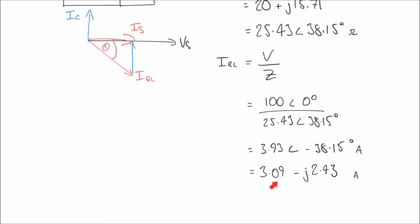The current drawn through the RL branch — the motor in reality — is 3.09 minus j2.43. The 3.09 amps is what we call the real current, and the j term, minus 2.43 amps, is the reactive current. On the phasor diagram, IRL's real current is the horizontal component and the reactive component of minus 2.43 is pulling downwards. So we want our capacitor to draw plus j2.43 amps to cancel out the minus j2.43 reactive current in the RL branch.